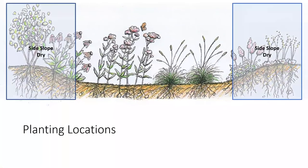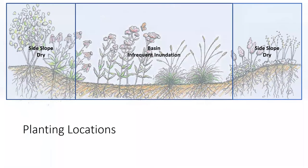When planting a rain garden, the side slopes are where you'll put your more dry-loving plants, since they won't get as inundated with water as the basin. Those slope plants mainly help provide stability. In the basin, that's where you want to include plants that can handle infrequent inundation.